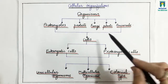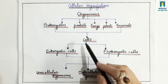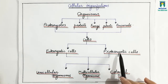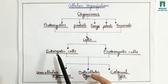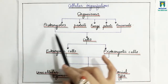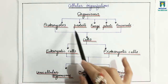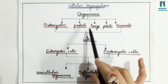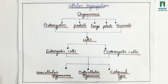All of these organisms are made up of cells, and cells are of two types: eukaryotic cells and prokaryotic cells. Eukaryotic cells have a prominent nucleus present, while in prokaryotic cells, the prominent nucleus is absent. The first group, prokaryotes, is made up of prokaryotic cells, while the remaining groups — protists, fungi, plants, and animals — are made up of eukaryotic cells.